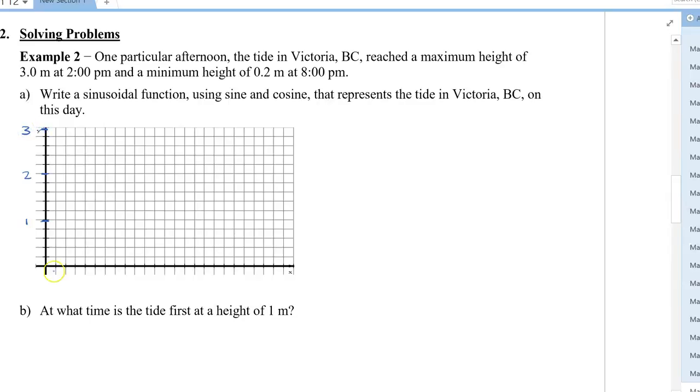For my time, I'll count every 2 spaces, and whenever we start using time for tides, we usually start at 12 a.m. So this will be 12, 2, 4, 6, 8, 10, 12, and then we reach 12 p.m. over here. Then 2, 4, 6, 8, 10, and 12. So at 2 o'clock, which is 2 p.m. here, it has a height of 3 meters. At 8 o'clock, it's only 0.2, which is right over here.